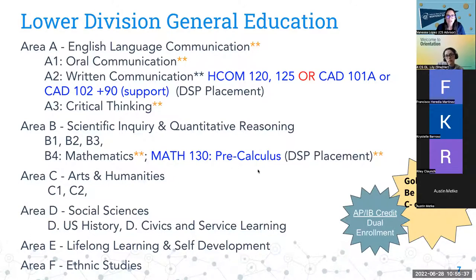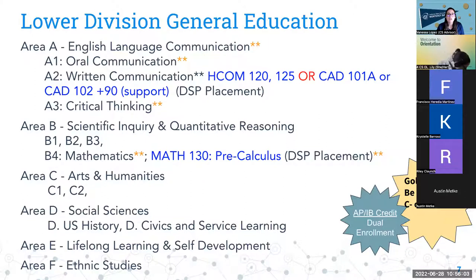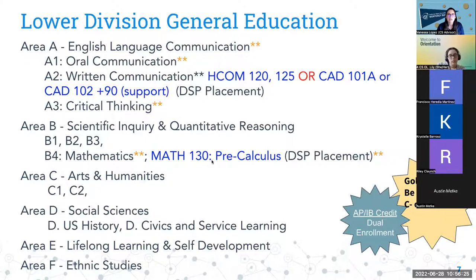There is another way for traditional students to skip pre-calculus: by taking the ALEKS placement exam. I'll email you that link. If you've done pre-calculus in high school and want to skip it at CSUMB, take the ALEKS placement test and earn a score of 75 or higher. Take a screenshot of that score, send it to me, and I'll recommend a different math class — either discrete mathematics or Calculus 1.